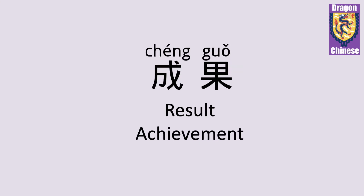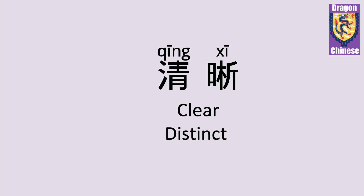成果 — result, achievement. 清晰 — clear, distinct.